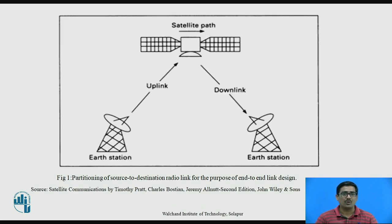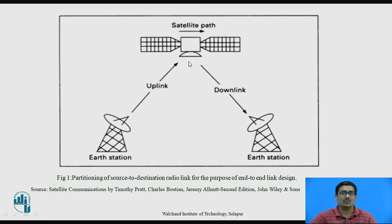Figure 1 shows the source-to-destination radio link for the purpose of end-to-end link design. If you observe this diagram, there are two Earth stations. This is the first Earth station and this is the second Earth station. With the help of the satellite path, we can communicate between these two Earth stations. If I transmit data from one Earth station to another, with the help of the uplink we upload the data to the satellite, and then with the help of the satellite we downlink that data to the other Earth station.